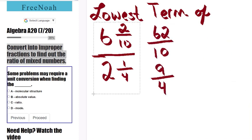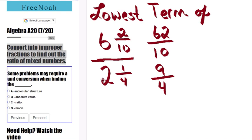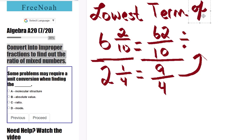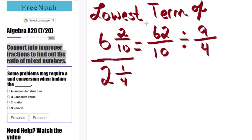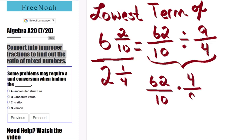Now that both of our mixed numbers are in improper fraction format, we're going to divide. 62 over 10 divided by 9 over 4. We're going to take our second fraction here, 9 over 4, flip it, and convert the division sign into a multiplication sign. So we have 62 over 10 times 4 over 9.